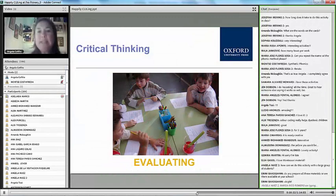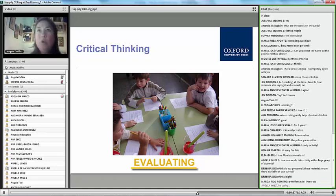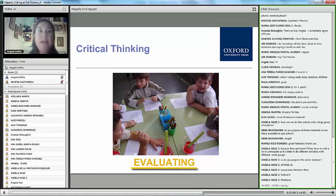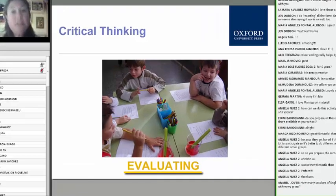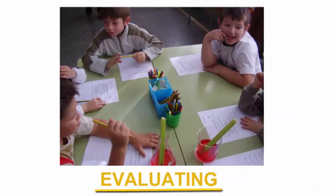The next step is evaluating. Once the children have all this information, they have to do something with it. Here we are doing an experiment, and when you do an experiment you have to follow the scientific method: look at what you are going to do, the materials you are going to use, make hypotheses about what is going to happen, then do the experiment and at the end evaluate the results. In this case, they are experimenting how plants absorb water.